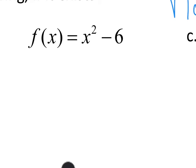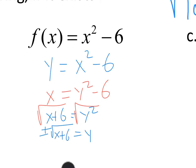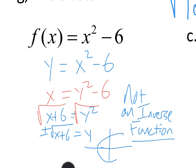Let's try that again. Write it in terms of y, rewrite as y instead of f of x. Swap the x and the y: x equals y squared minus 6. Add 6 to both sides to get x plus 6 equals y squared. Take the square root and we get y equals plus or minus the square root of x plus 6. This is not a function because of the plus or minus, so it can't be an inverse function because it's not even a function.